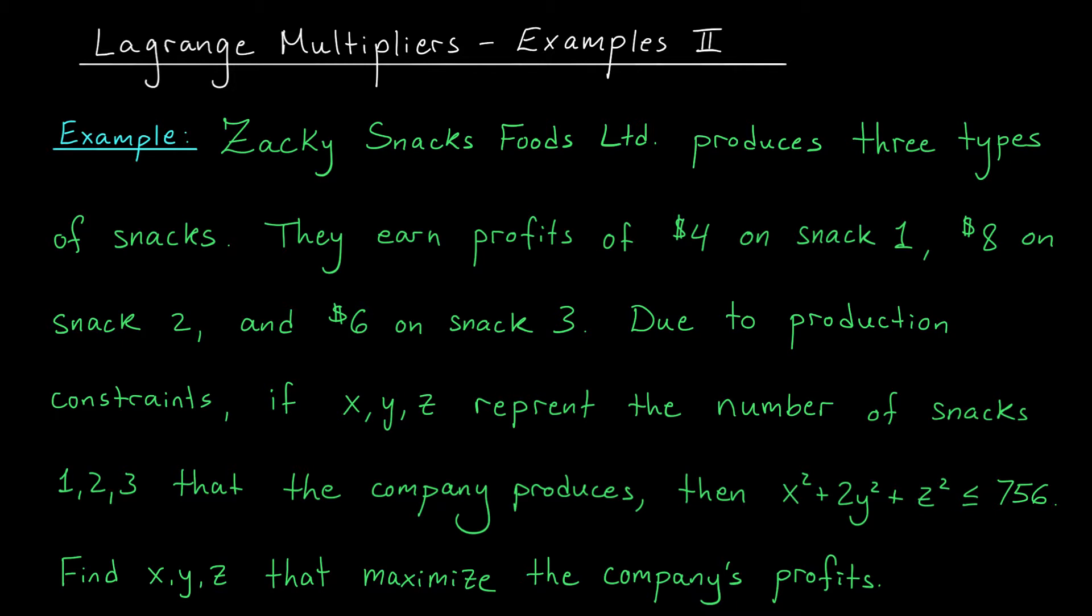Now they can't just produce as much as they want, they have certain limitations they have to work with. So if x, y, and z represent the number of snacks the company produces of types one, two, and three respectively, then x squared plus 2y squared plus z squared has to be less than or equal to 756. This is their production constraint. We need to find the values of x, y, and z that maximize the company's profits.